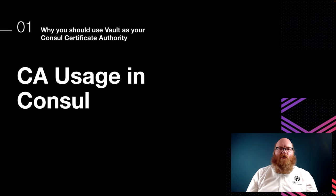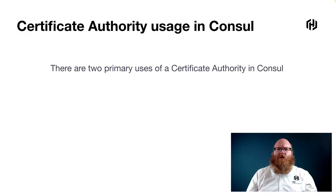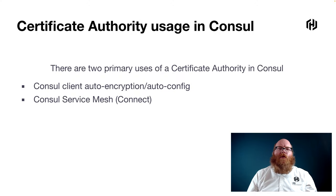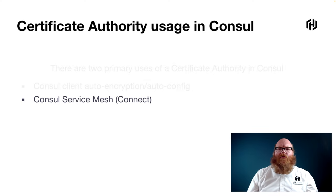Let's start off by talking about CA usage in Consul. There are two primary uses for a certificate authority in Consul. The first is Consul client auto-encryption or auto-config — two very related topics that help enable or ease the deployment of Consul clients. There's also the Consul service mesh, or what you'll often hear referred to as Consul Connect. Today I'm going to focus primarily on the implications of your CA choice within the Consul service mesh, but the overall ideas are broadly applicable to the usage of the CA in auto-encrypt and auto-config.